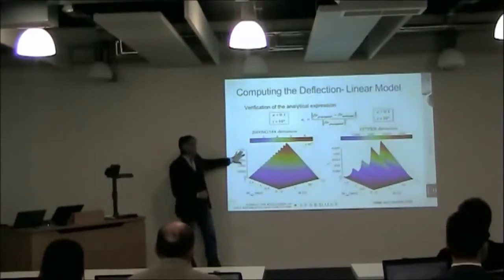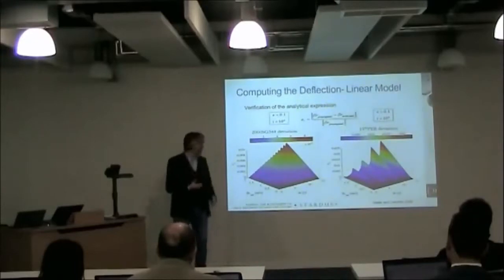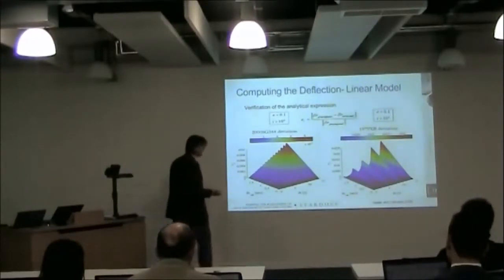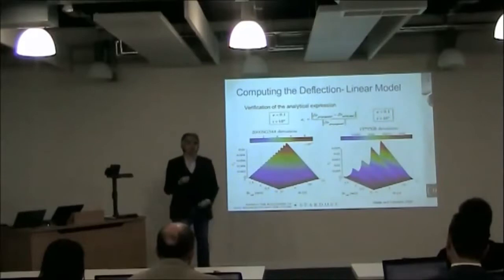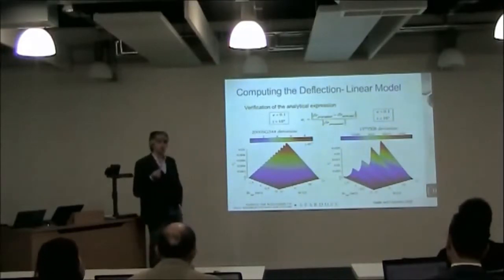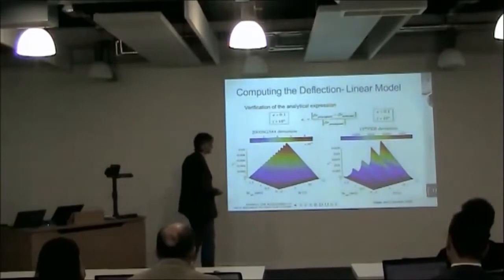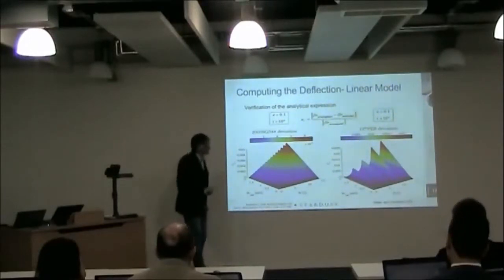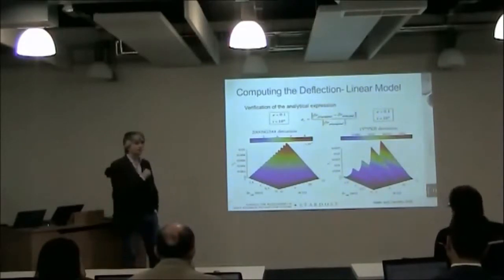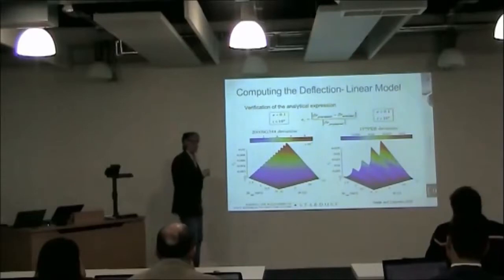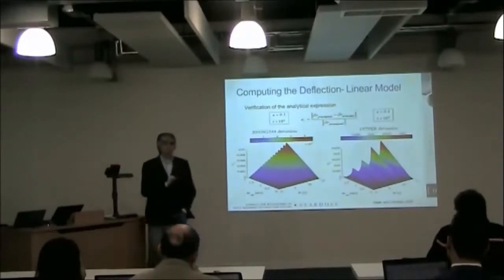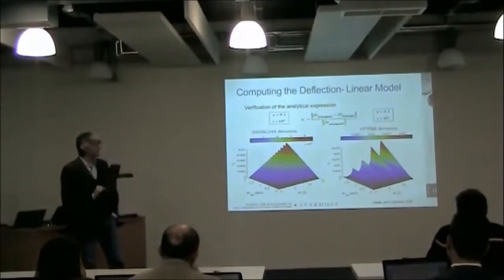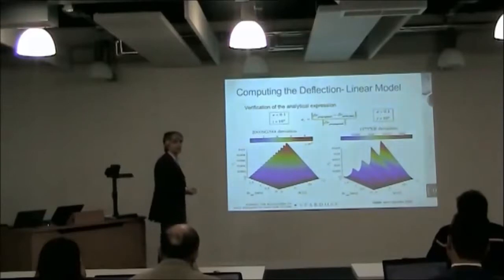It is also interesting to compare what happens between a highly elliptical asteroid and one that is not very elliptical. The behavior of the deflection is quite different, and you see a periodicity in the error which corresponds to the periodicity in the effectiveness of the deflection.